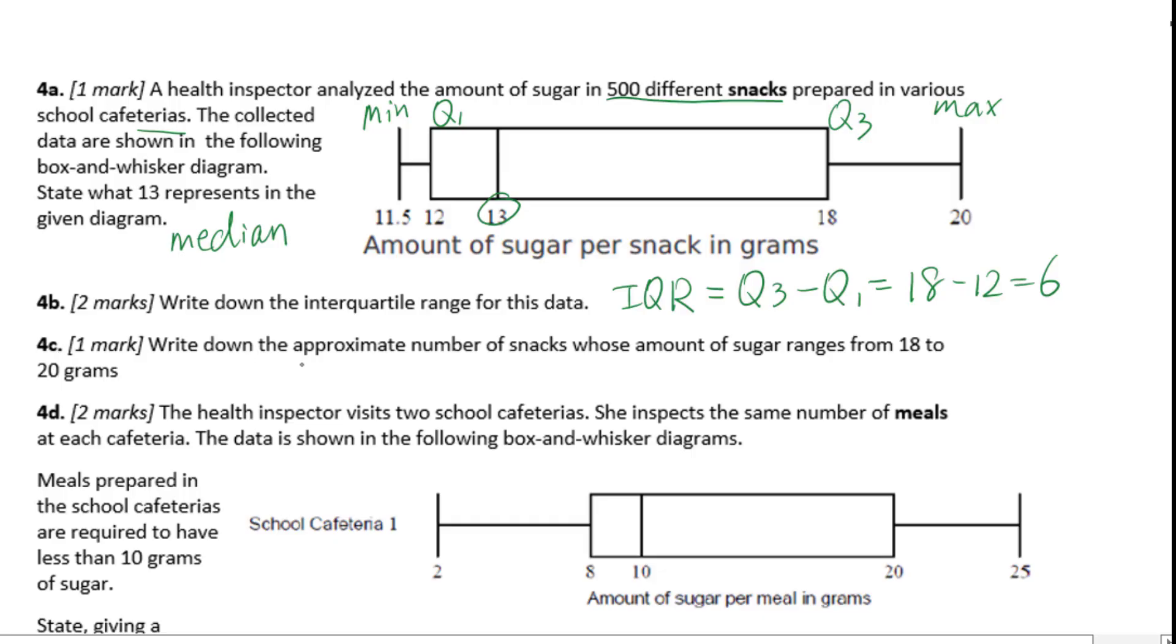For 4C, write down the approximate number of snacks whose amount of sugar ranges from 18 to 20 grams. For a whisker plot, from minimum to first quartile, this is 25%. From first quartile to median, 25%.